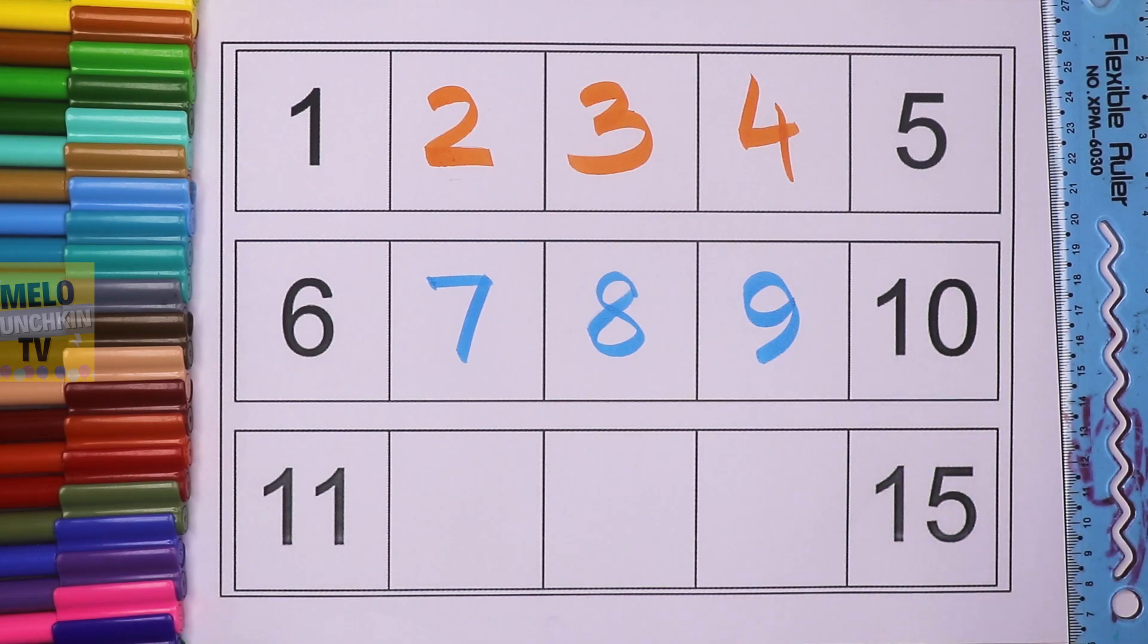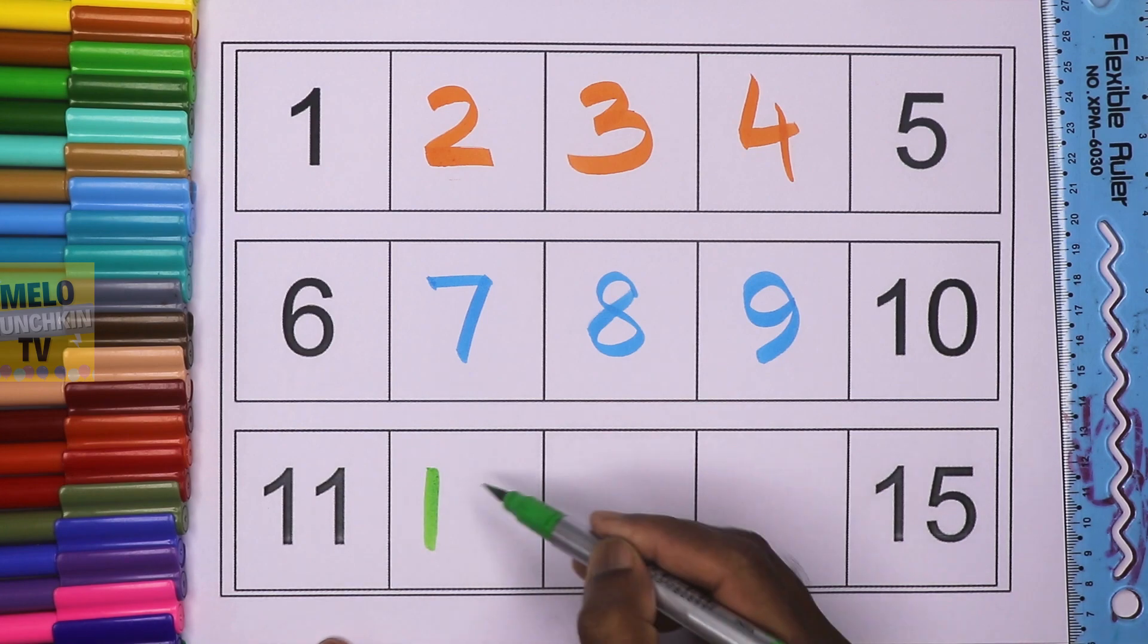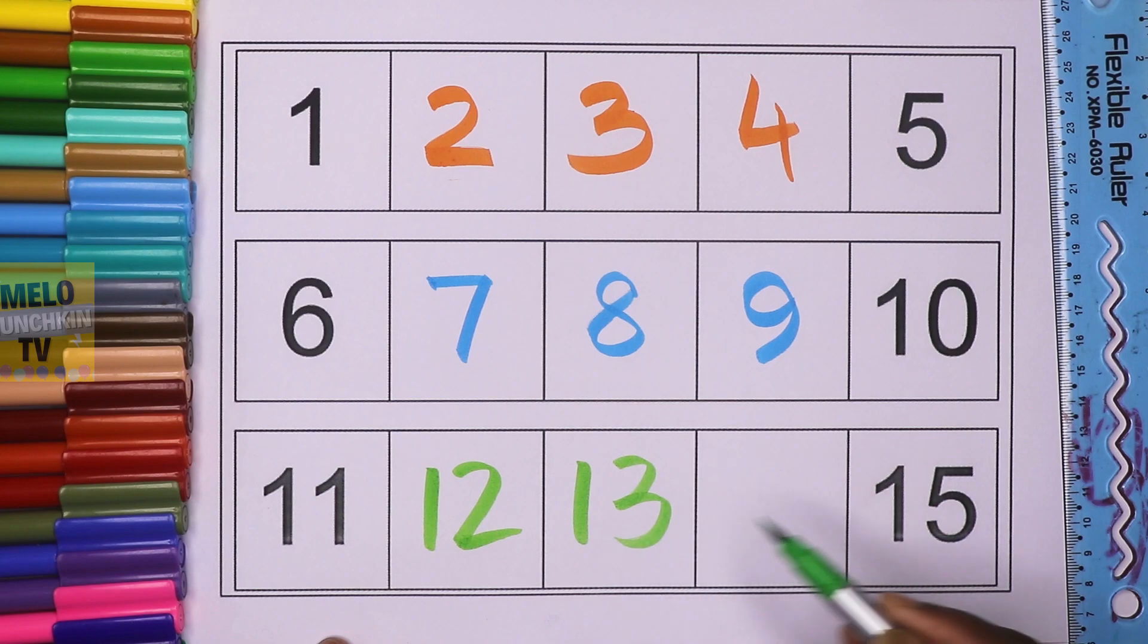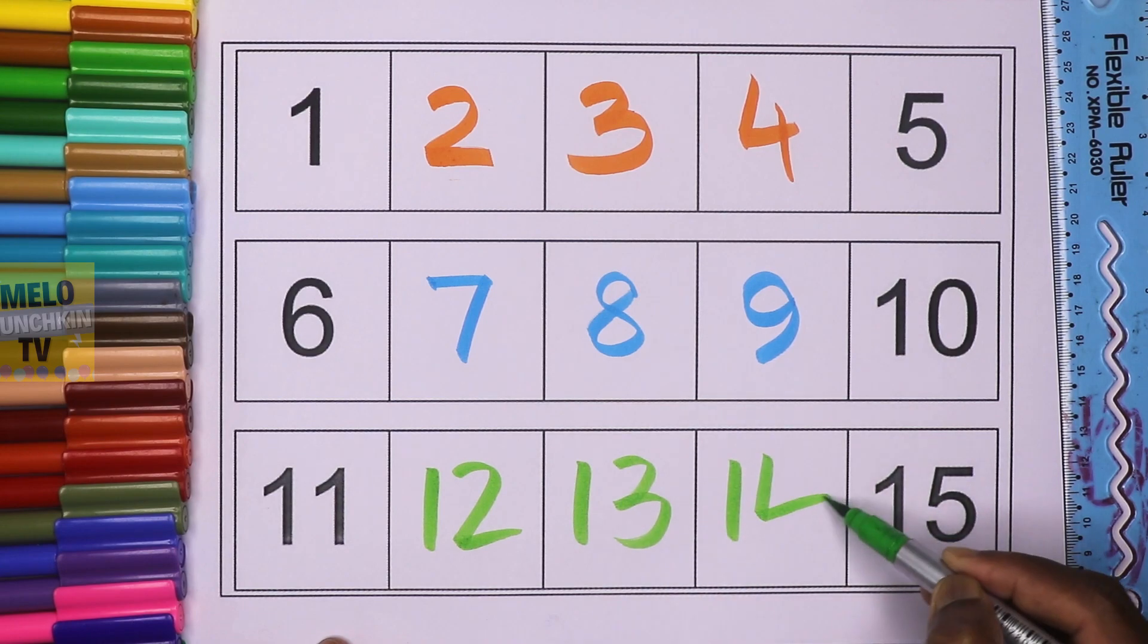What comes between 11 and 15? After 11: 12, 13, 14, and 15. So the missing numbers are 12, 13, and 14.